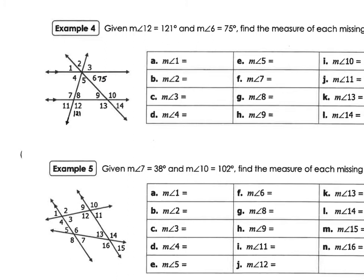Let's look at the bottom set — angles seven, eight, eleven. Angle seven would be 121 degrees. To find angle eight and eleven, we do 180 minus 121, which gives us 59. So angle eleven is 59 and angle eight is 59.